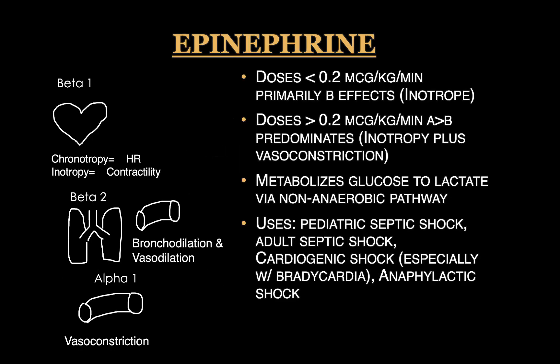The next vasoactive medication is epinephrine. Epinephrine works everywhere. At lower doses it works on beta-1 and beta-2 receptors, causing inotropy, increased contractility, and increased heart rate, and can also cause vasodilation. The predominant effects are beta-1 at lower doses. As epinephrine is titrated up to higher doses, it can have alpha-1 effects causing vasoconstriction. You're not losing your beta-1 inotropic effects at higher doses — rather, as you go higher, it starts working more on the vasculature to increase vasoconstriction.